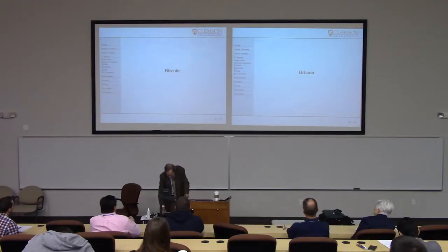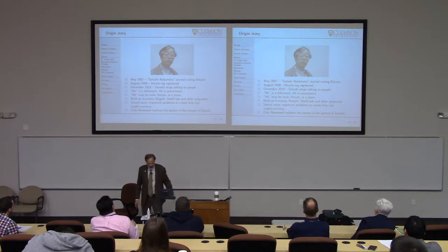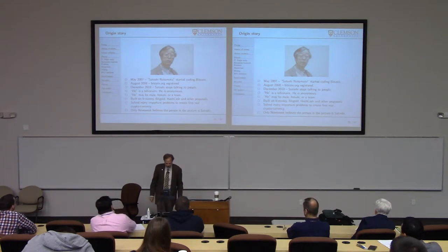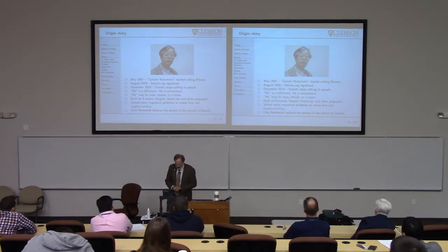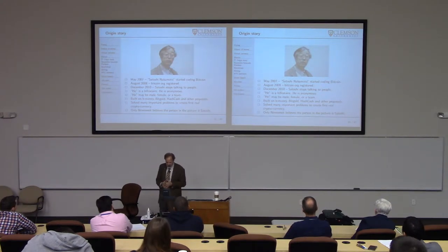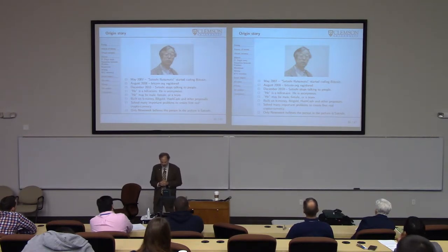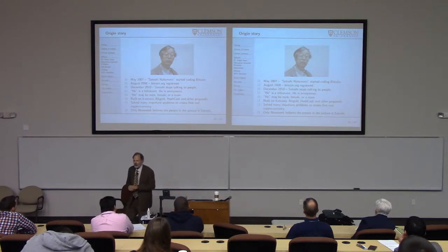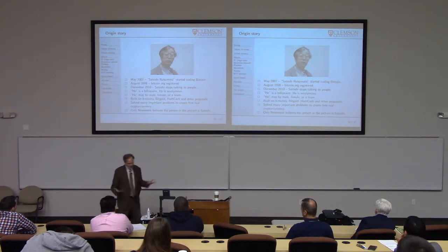Bitcoin. In May 2007, Satoshi Nakamoto started writing the program for Bitcoin. In 2008, he registered Bitcoin.org — Satoshi is a male name. In 2010, Satoshi disappeared and had no more contact with anyone. Satoshi is anonymous and a billionaire — could be male, female, or a team, but is referred to as he because Satoshi is a male Japanese name.